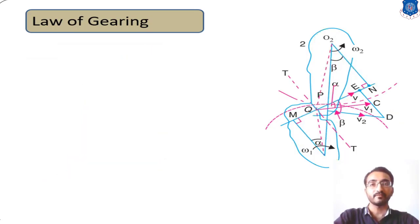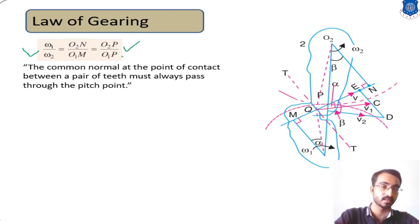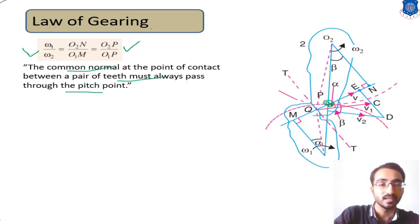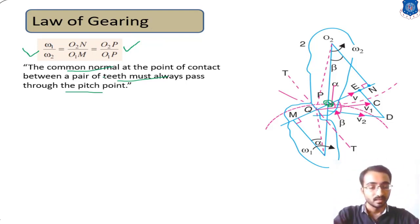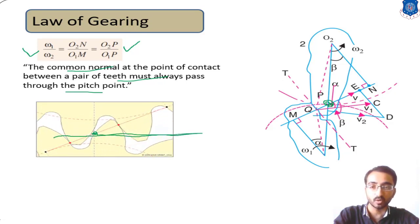In summary, for the law of gearing, the equation ω1/ω2 = O2P/O1P can be satisfied only if point P remains at a fixed position on the line O1O2. For that, the common normal and common tangent at the contact point Q must always pass through pitch point P. This is the basic condition of the law of gearing, and it is very essential for designing a gear.